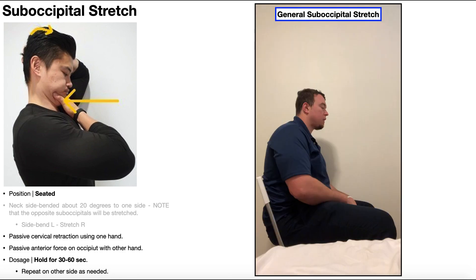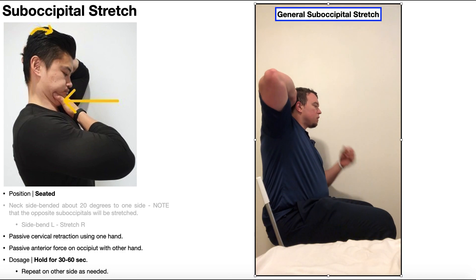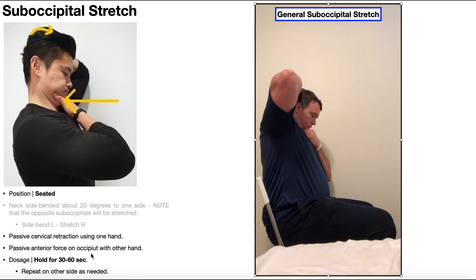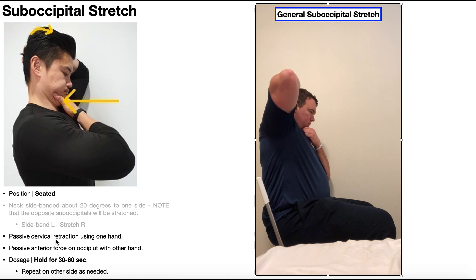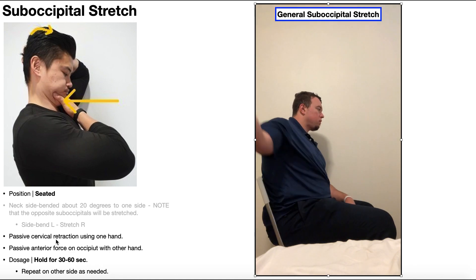Here I'm using my right arm to give that passive anterior force on the occiput, the back of the skull, and I'm using my left hand to do that passive cervical retraction. It doesn't matter which arm you use — left or right — as long as one's doing one thing and the other's doing the other.